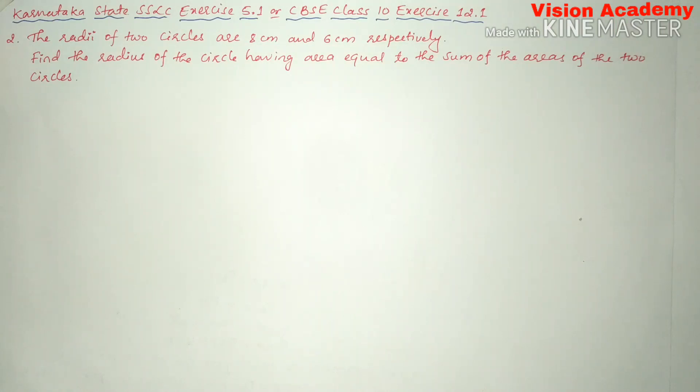Question number two: The radii of two circles are 8 centimeter and 6 centimeter respectively. Find the radius of the circle having area equal to the sum of the areas of the two circles.